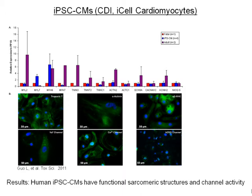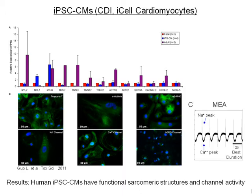We also did a considerable amount of expression profiling of these cells, and we found that they were much closer to the fetal than to the adult cardiomyocyte. But if you keep these cells in culture over a long period of time, they tend to increase the expression of adult cardiomyocyte markers. We found that this model has both functional contractile and functional electrophysiological properties.